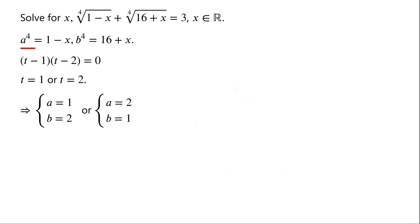Since a⁴ equals 1 minus x, we have x equals 1 minus a⁴. When a equals 1, x equals 1 minus 1, which is 0. When a equals 2, x equals 1 minus 16, which is negative 15.